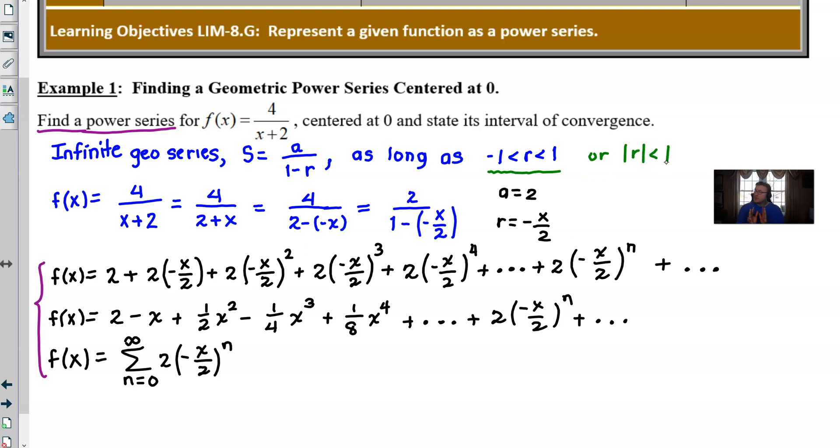Maybe that might work a little better for you. I think with the students that I teach, we tend to like to leave the confines of the absolute value and think of it as strictly between negative 1 and 1. In that case, we just can say negative 1 is less than the r, which was negative x over 2, less than positive 1. And then at this point, if we multiply everything through by a 2, we get negative 2 is less than negative x is less than positive 2.